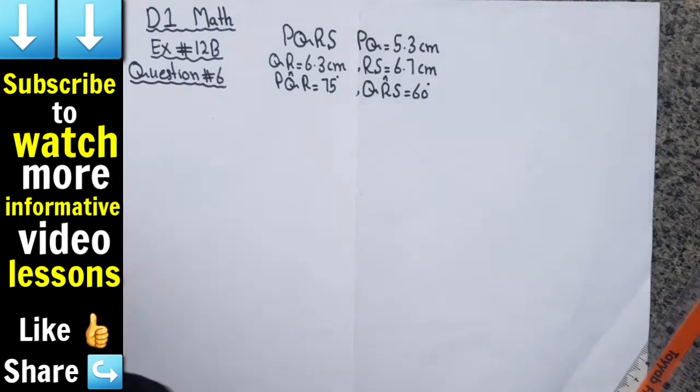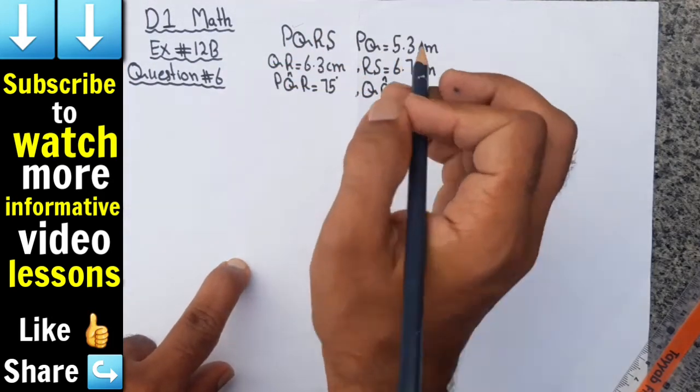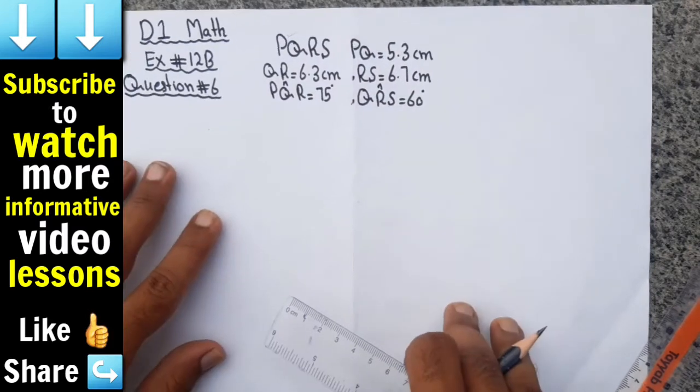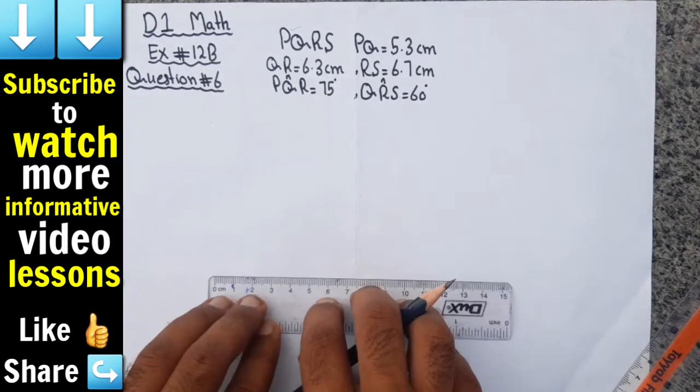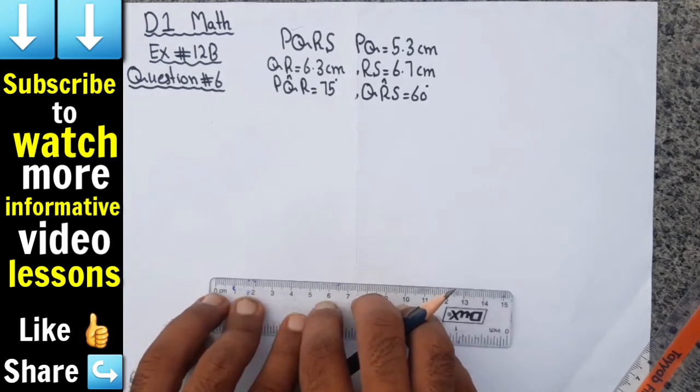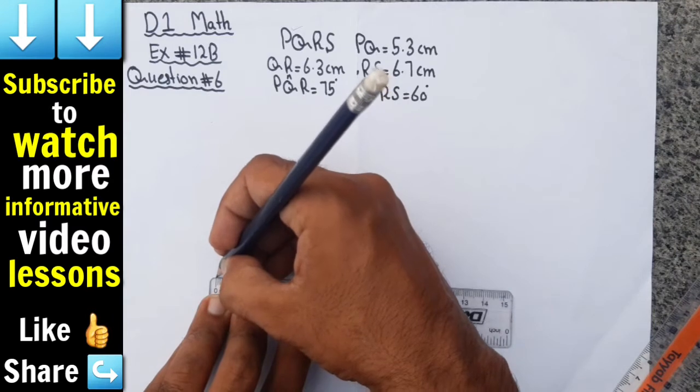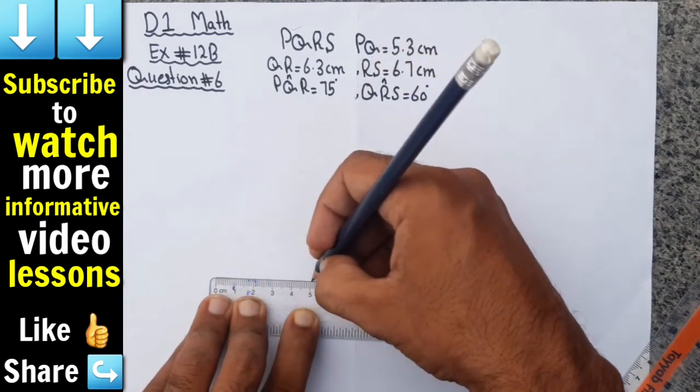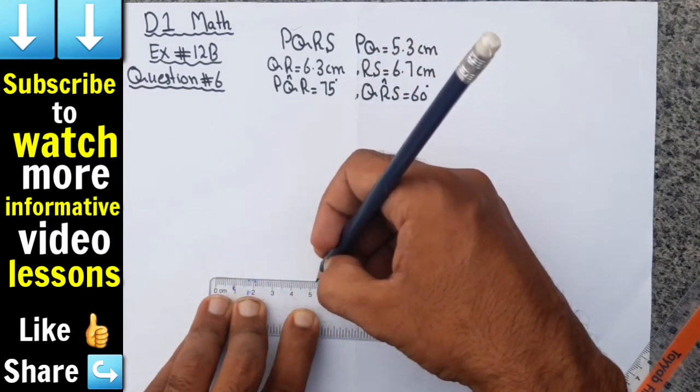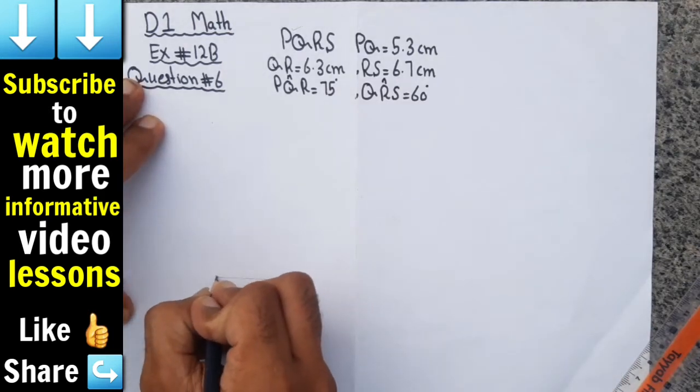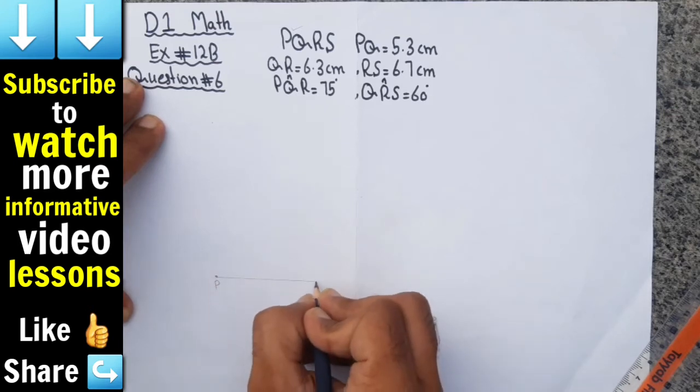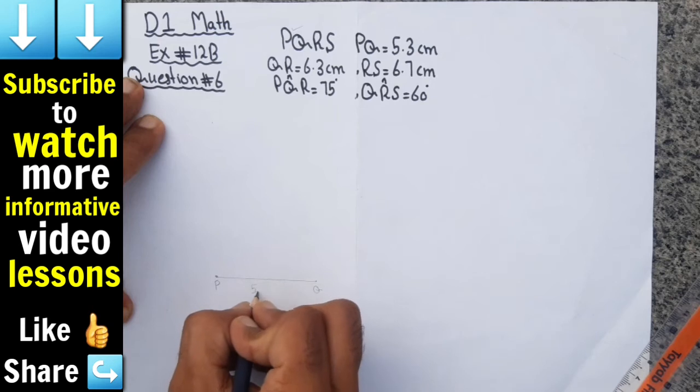First of all we will draw a line PQ equal to 5.3 centimeter with the help of scale. So this is 5.3 centimeter line. This is point P, this is point Q, and length is 5.3 centimeter.